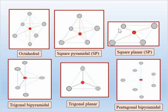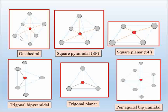Here are the geometries of six coordination compounds. The first diagram is for the octahedral complex, where you can find six M-L bonds which are equal to each other. Four ligands are present in the square planar position in the xy plane, and two ligands are present in the axial position, above and below the plane.